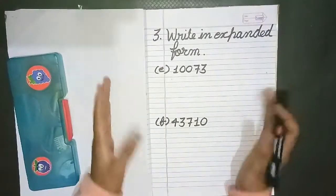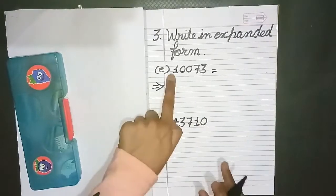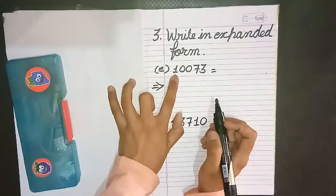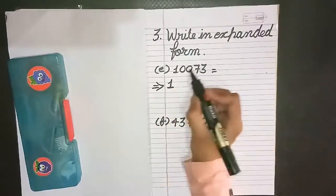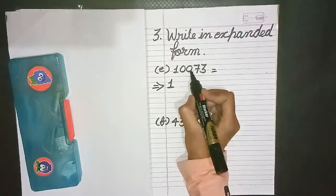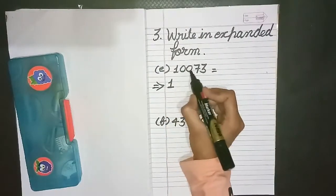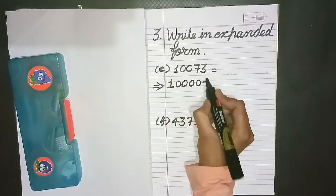Third part is write in expanded form. So today I'm going to tell you how to write the numbers in expanded form. So we have to expand these numbers. Here first digit is 1. So and it has 4 digits at its right hand side. So here let's check: 1, 2, 3, and 4 digits it have with it.